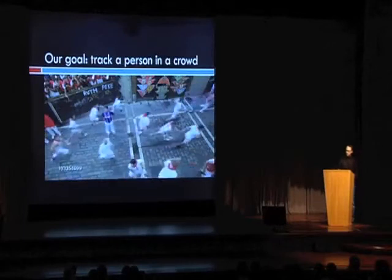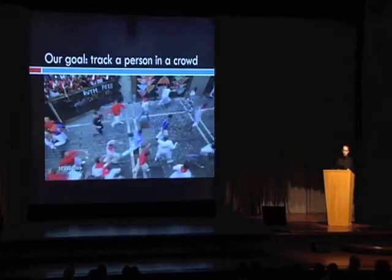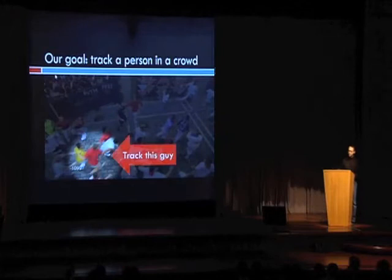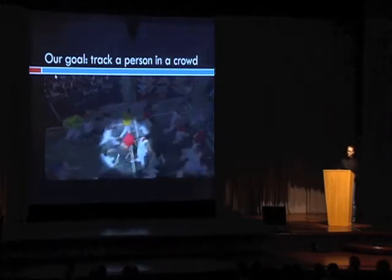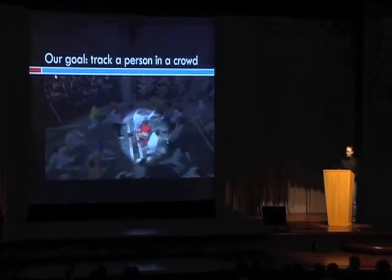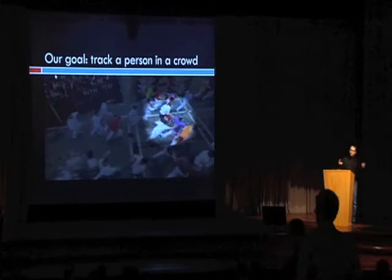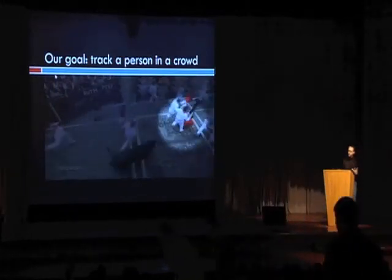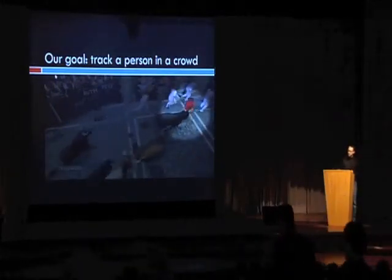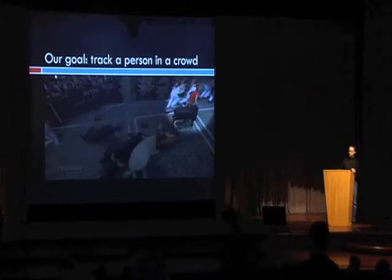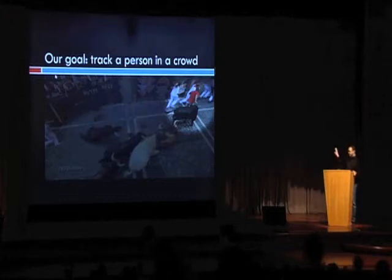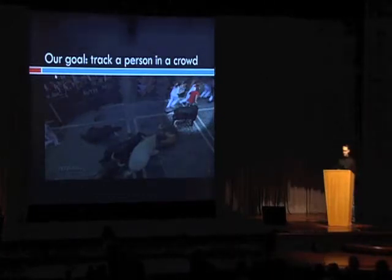Our goal in this work is: given the initial position of a person, we want to be able to track them as they move throughout a crowd. As you'll notice from this example, the constant interaction amongst the people within the crowd, the many inter-object occlusions, and the complex behavior of the person in this video renders this a very challenging task. By the way, the person ends up just fine at the end of the video.